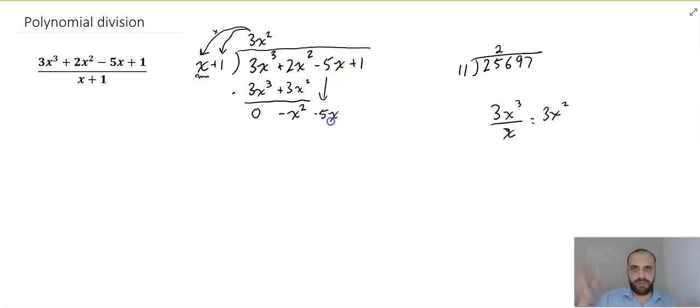Alright, and then the process repeats over and over and over again. So, negative x squared divided by x. I can do it over here. Negative x squared divided by x. That's just going to be negative x. Again, you can do that in your head. Negative x.